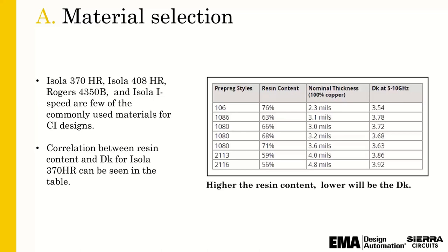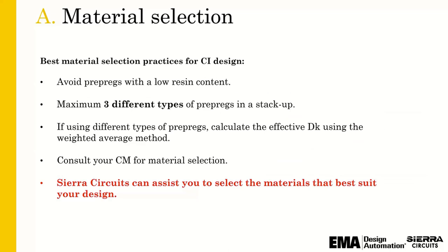The correlation between resin content and Dk: the higher the resin content, the lower the Dk value of the dielectric, because the Dk of the resin is lower than that of the glass weave. You can also get flat glass to help reduce the knuckle effect. The takeaway is to avoid prepregs with low resin content — partly because of resin starvation during lamination. Also, try not to use too many different glass styles and prepreg types, as it makes press-out thickness prediction more difficult.